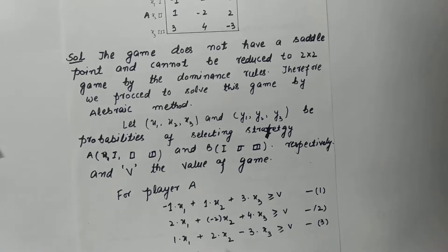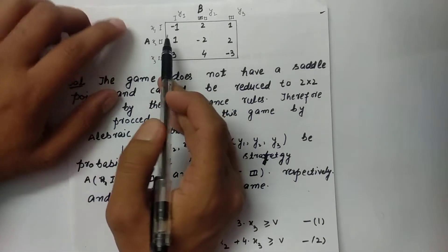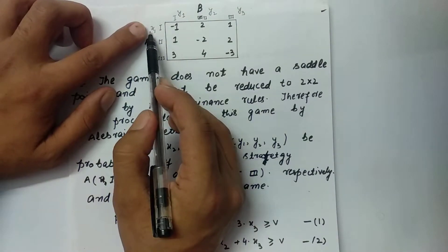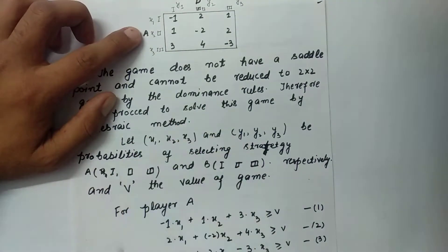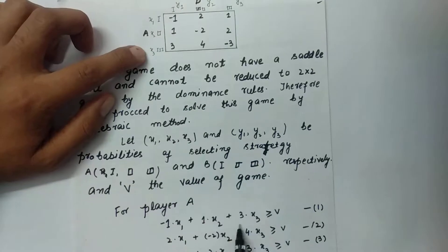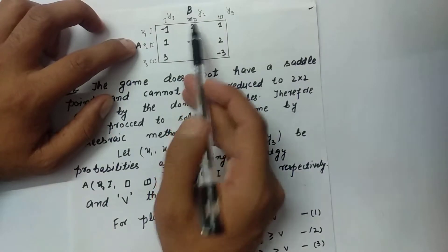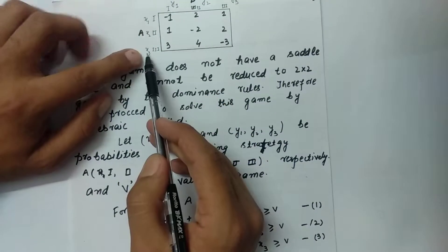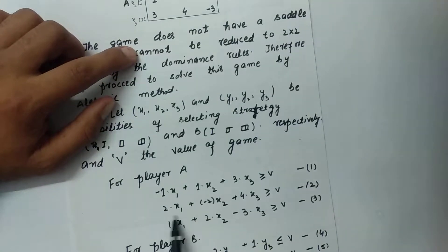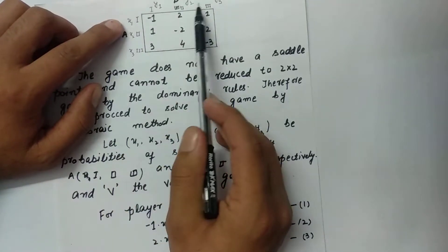When B uses his first strategy, the value of game for A will be: x1 multiplied by minus 1, plus x2 multiplied by 1, plus 3 multiplied by x3, which is greater than or equal to v. In the same way, when player B uses his second strategy: 2 multiplied by x1, plus minus 2 multiplied by x2, plus 4 multiplied by x3, greater than or equal to v.